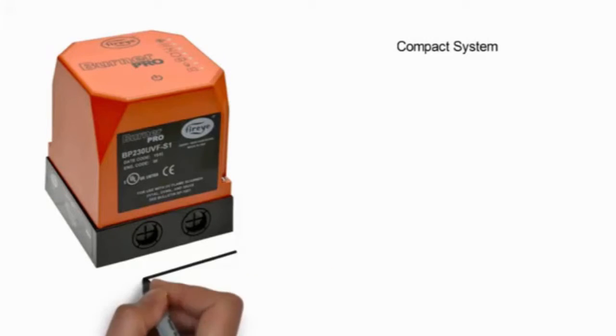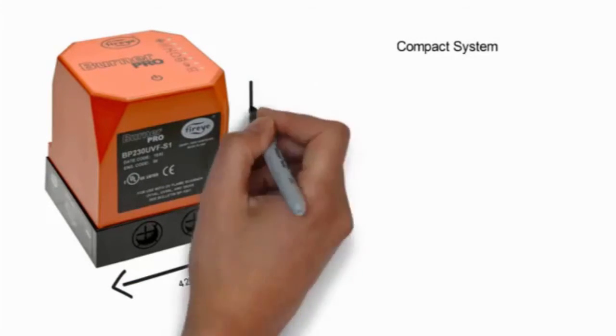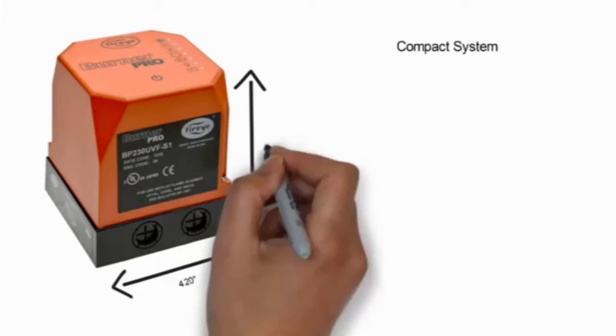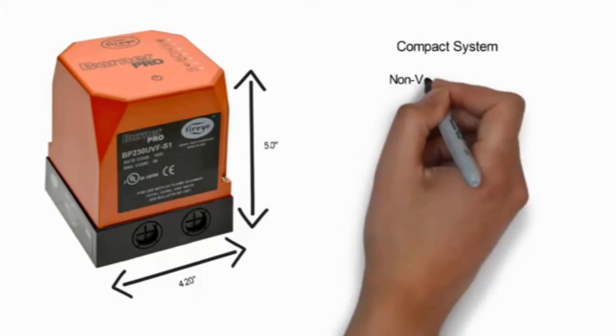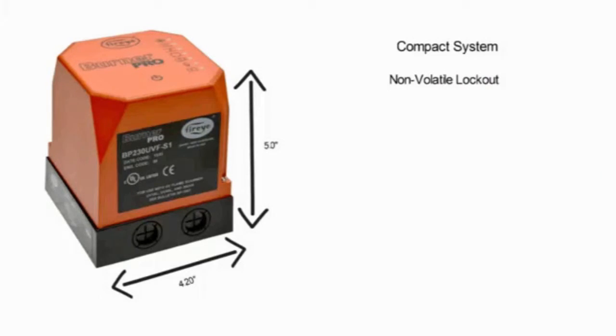Ample conduit knockouts on the side and bottom of the wiring base facilitate ease of installation. Pre-programmed operational timings ensure safe operation of the burner system. Non-volatile lockout capability stores lockout information even in the event of a power outage.